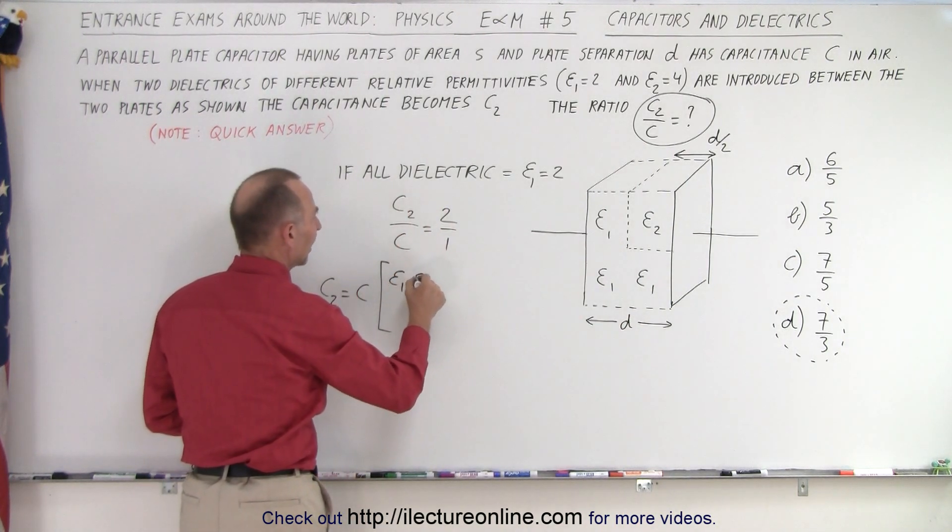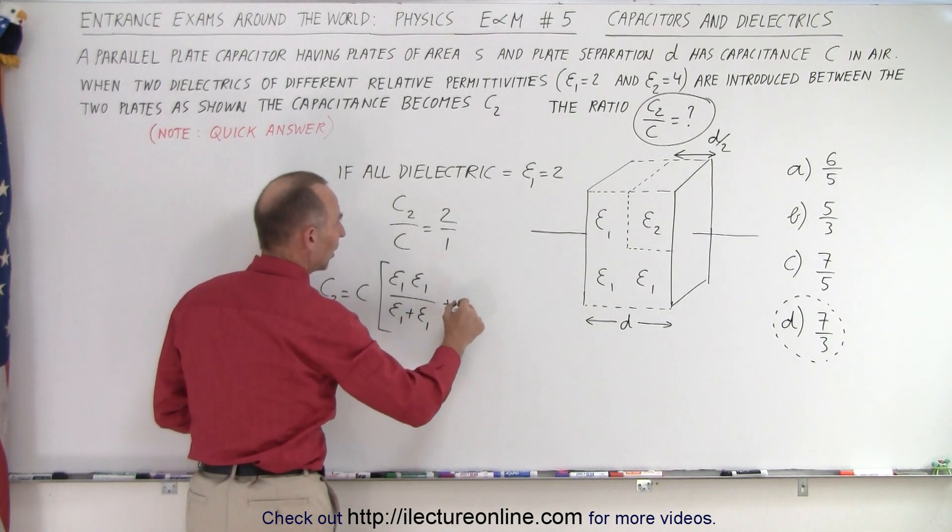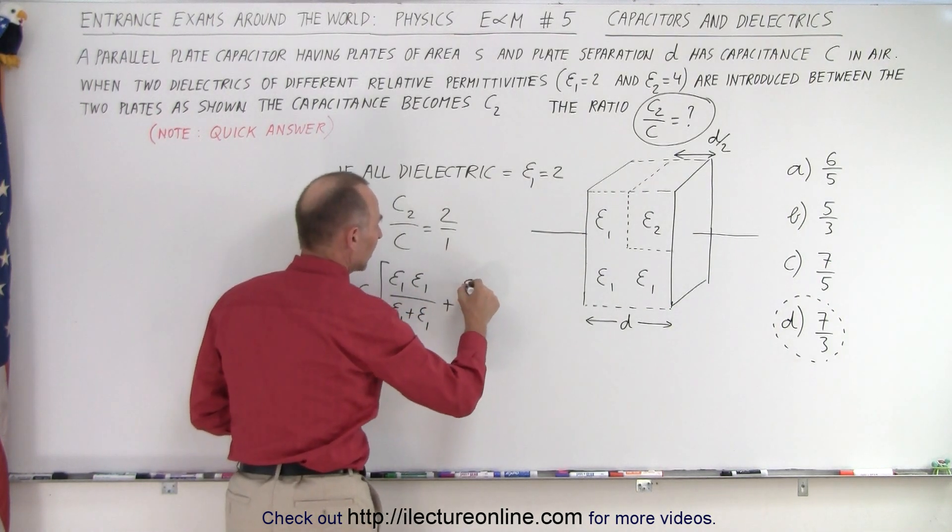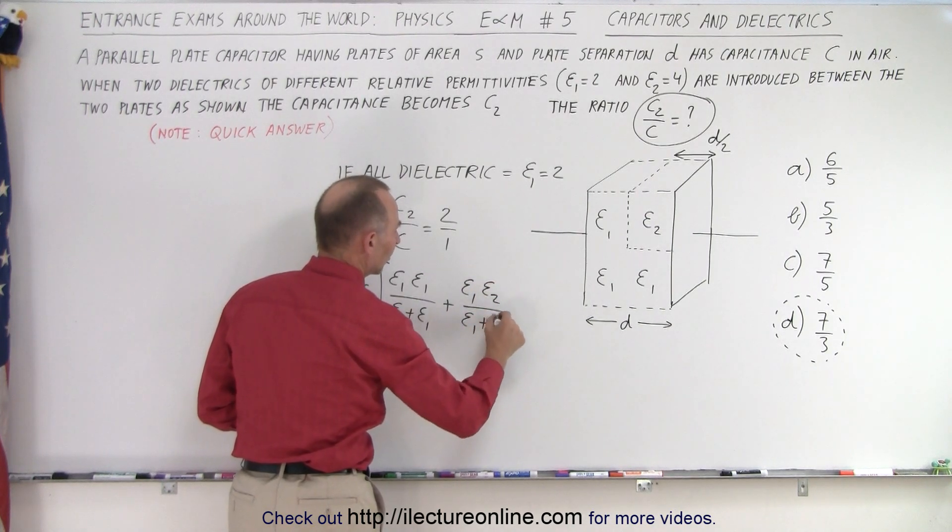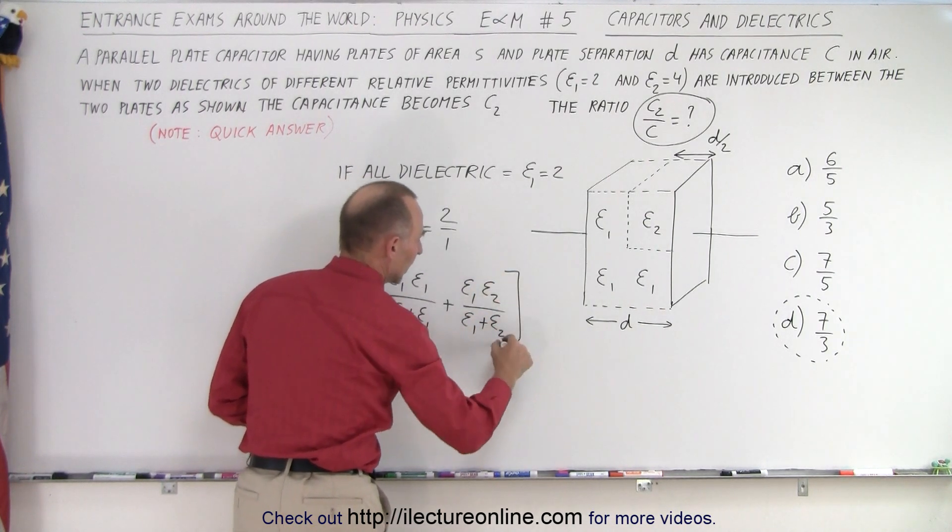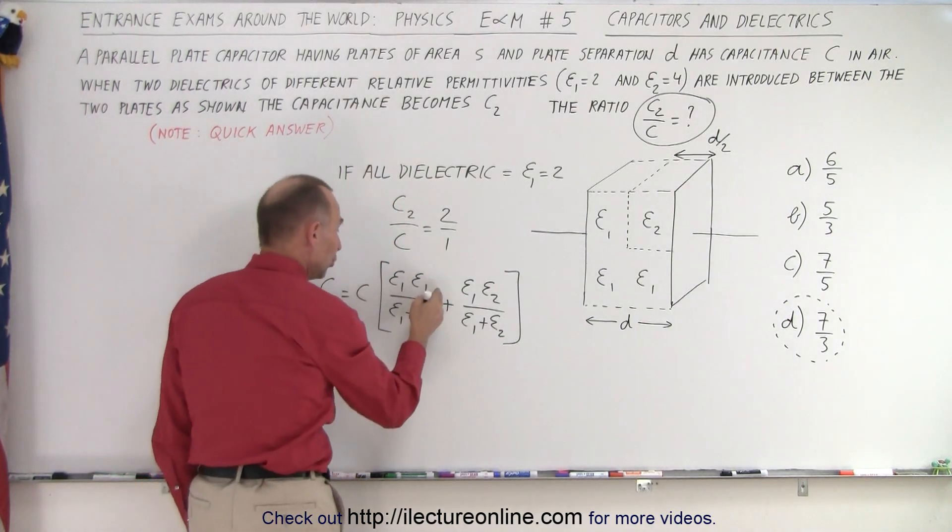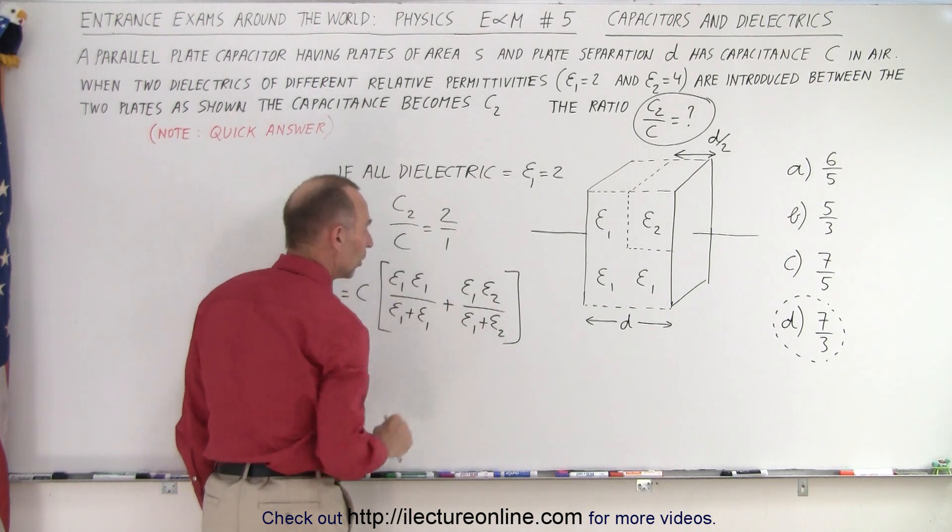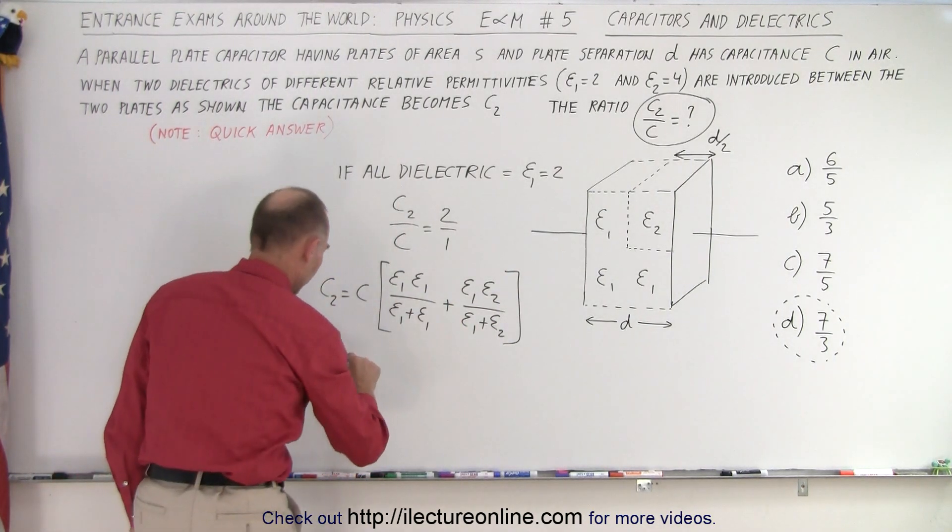The product over the sum: e1 times e2 over e1 plus e2. That turns out to work. Actually you want to put a one-half and a two with each one of those fractions, but we'll just skip that part. Let's plug in the numbers and see what we get.